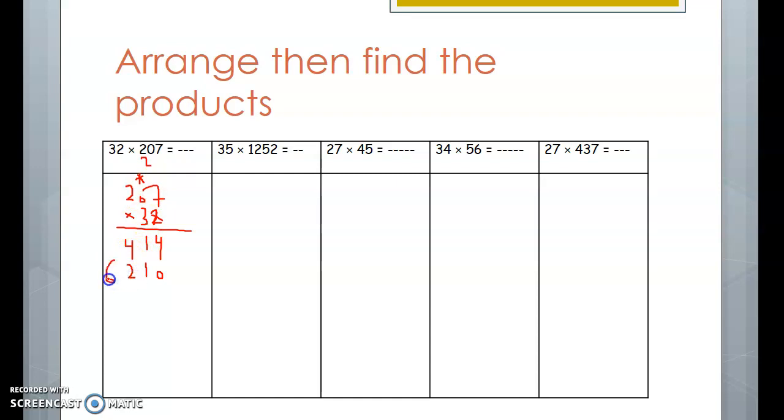The third step is to add the two lines together. 4 plus 0, 4. 1 plus 1, 2. 4 plus 2, 6. And here it's 6. So just 3 steps.